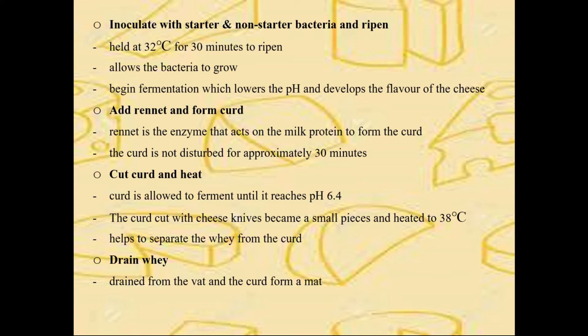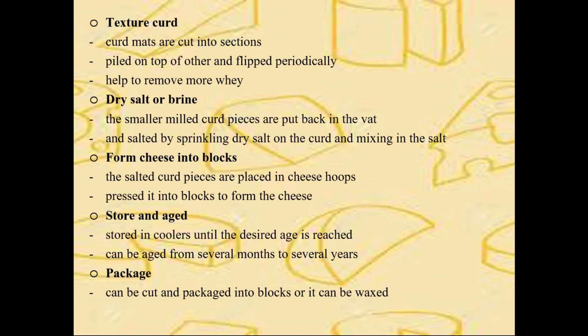The heating step serves to separate the whey from the curd. Next, the whey is drained off and the curd forms a mat. The mat is cut into sections and piled on top of each other and flipped periodically. This step is called cheddaring. It helps to remove more whey, allows fermentation to continue until a pH of 5.1 to 5.5, and allows the mat to combine together and form a tighter mat structure.